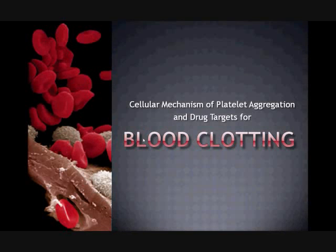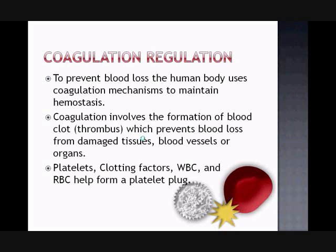This presentation will cover the cellular mechanism of platelet aggregation and some of the drug targets for controlling blood clotting. This process of blood coagulation is regulated by a series of mechanisms in order to prevent blood loss when damage to the body occurs. This process involves the formation of a blood clot, also known as a thrombus, which prevents the loss of blood from the damaged tissue, blood vessel, or organ.